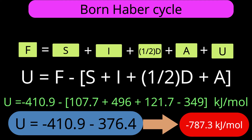Calculating for NaCl: ΔHf = −410.9 kJ/mol; sublimation energy S = +107.7 kJ/mol; ionization energy I = +496 kJ/mol; half-dissociation energy ½D = +121.7 kJ/mol; electron affinity A = −349 kJ/mol. Performing the calculation gives U = −787.3 kJ/mol as the lattice energy for formation of solid NaCl. This is why we have been using −787 kJ/mol as the experimental lattice energy for sodium chloride.